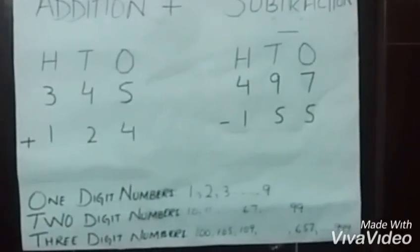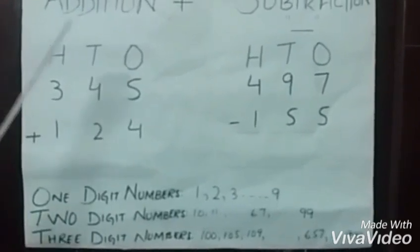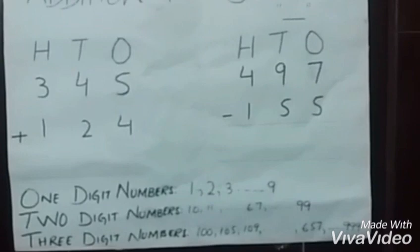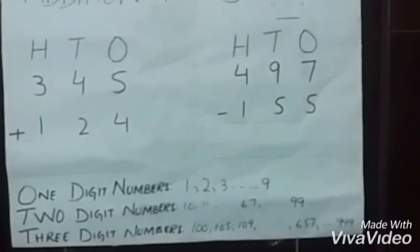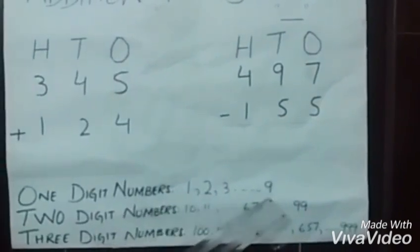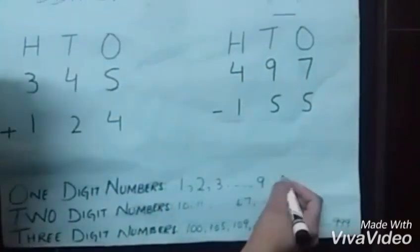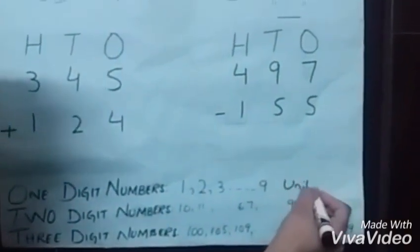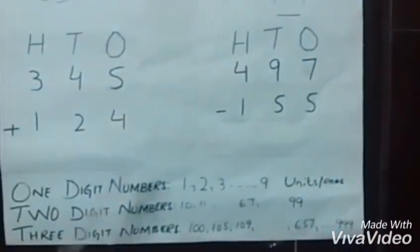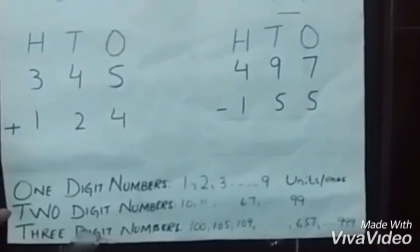Now we will solve some questions of addition and subtraction of three-digit numbers. Let's see and learn something about three-digit numbers. As we know, one-digit numbers are from 1 to 9, which consist of only units or ones.